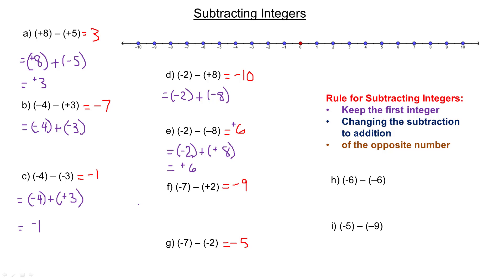For example F: keep negative 7 and change subtract 2 to adding negative 2. Adding two same-sign integers — both negative — 7 and 2 add to 9, so the answer is negative 9. For example G: keep negative 7 and change subtract negative 2 to adding positive 2. With different signs, subtract 7 and 2 to get 5. The bigger number is negative, so the answer is negative 5.